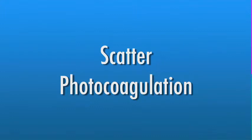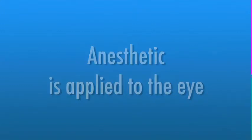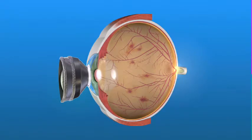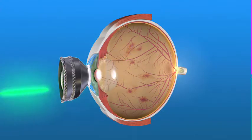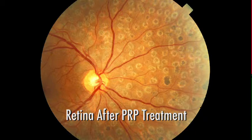The treatment is usually performed in an office setting. For comfort during the procedure, an anesthetic is applied to the eye. The laser is applied to the peripheral retina, avoiding the central macula. This causes the blood vessels to shrink and often prevents them from growing again in the future. It also decreases the chances of the blood vessels bleeding into the vitreous or causing a retinal detachment. In some cases, multiple laser treatments may be necessary.